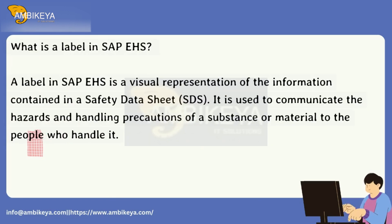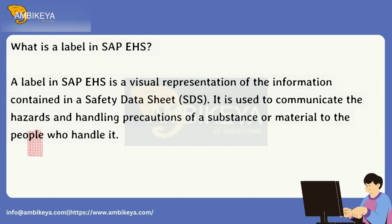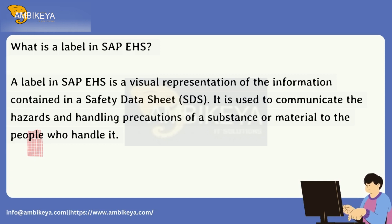What is a label in SAP EHS? A label in SAP EHS is a visual representation of the information contained in a safety data sheet (SDS). It is used to communicate the hazards and handling precautions of a substance or material to the people who handle it.